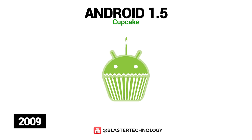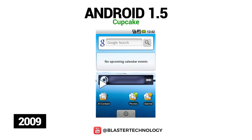The next major update was Android version 1.5 in 2009, which was the first version to use Google's dessert-themed naming scheme. The first Samsung Galaxy phone came with Android 1.5 Cupcake, which had new features such as the ability to upload videos to YouTube, automatic screen rotation, third-party keyboard support, support for widgets, copy and paste features on the web browser, and the ability to check phone usage history.